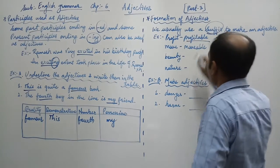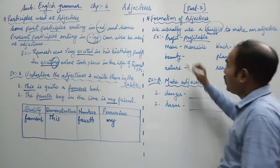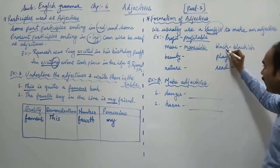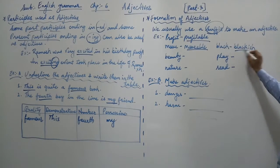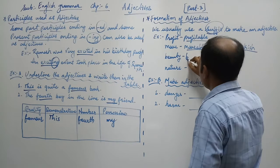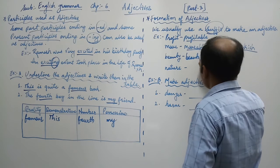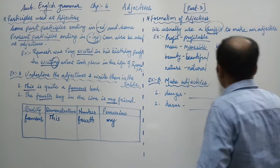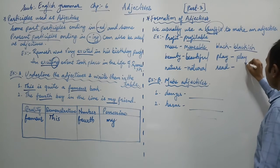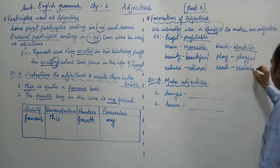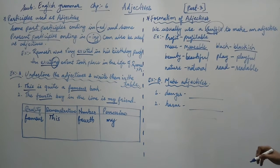For example, profit is changed into profitable. Move, a verb, becomes moveable. Black, an adjective, becomes blackish. In the same way beauty becomes beautiful, nature becomes natural, play becomes playful, and the last, read becomes readable.